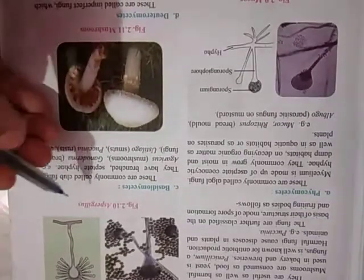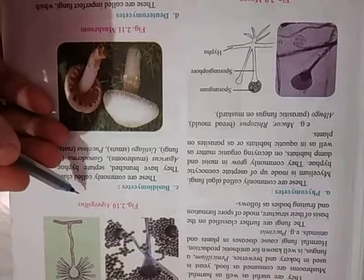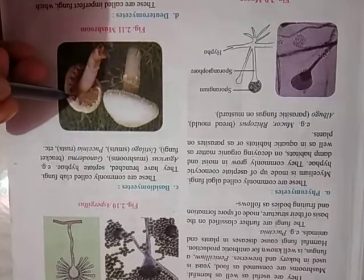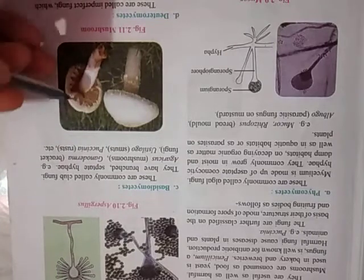Then Basidiomycetes. As commonly seen in the diagram, it is commonly called club fungi. You can see all the spores are in a club form. They are commonly called the club fungi.